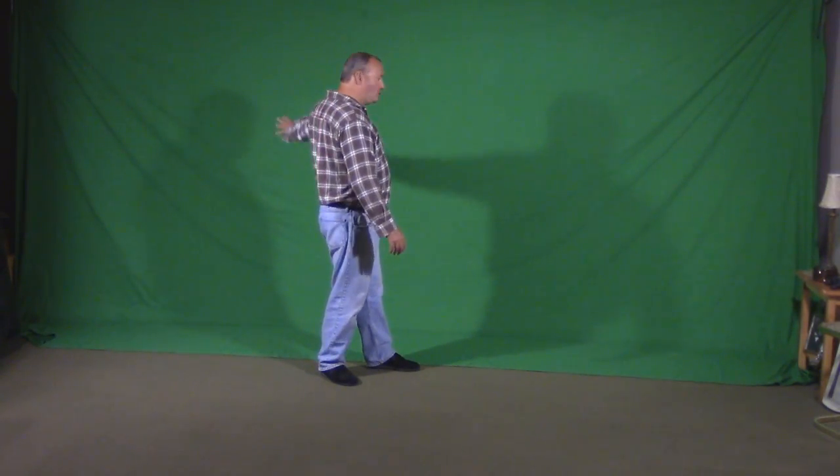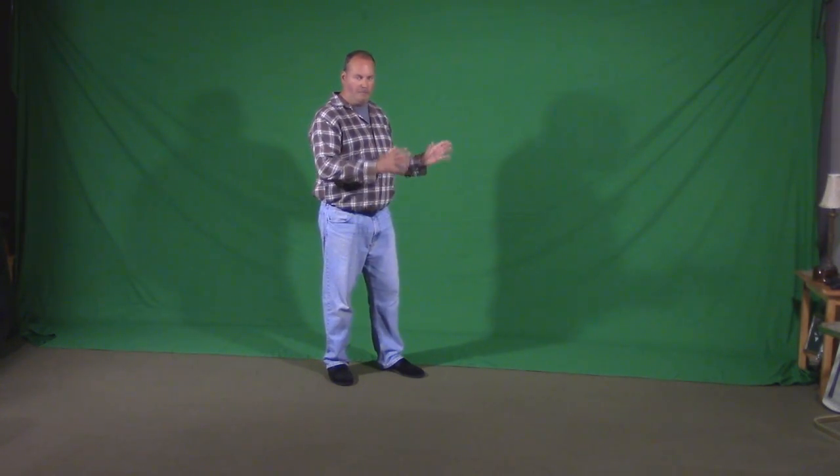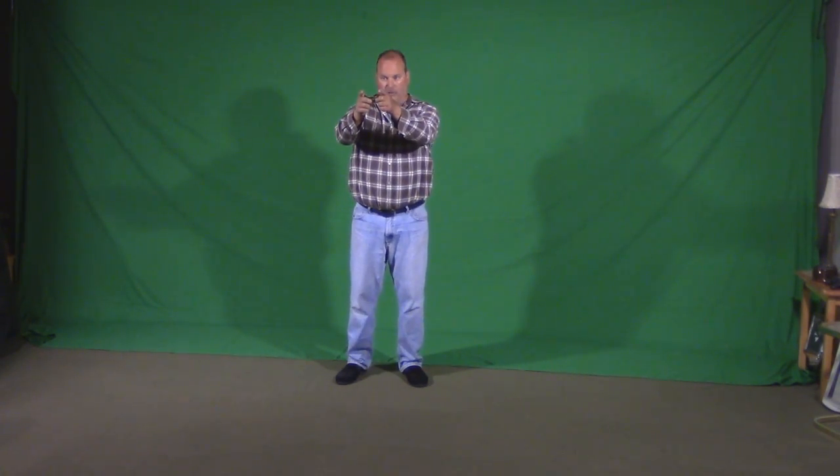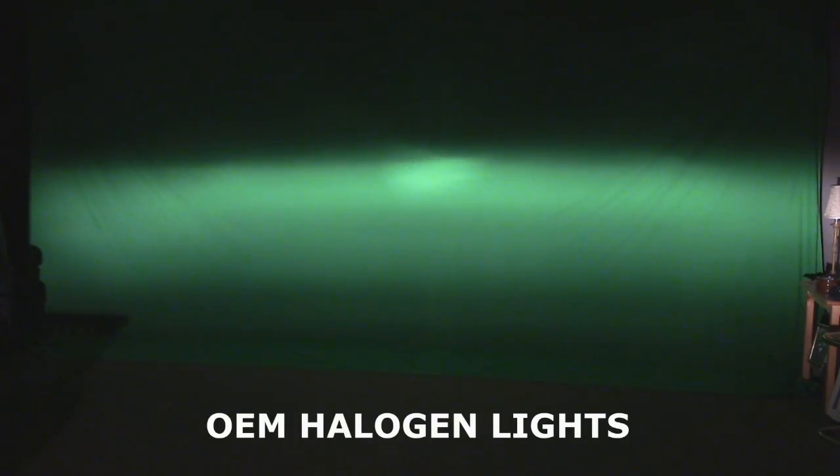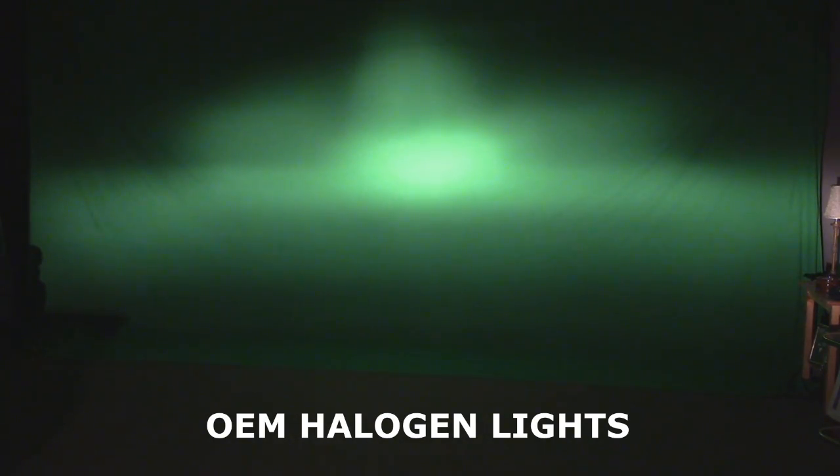Okay, I cleaned out my entire basement. I set up my green screen in behind. I'm going to use that as a wall to show you the beam patterns for each light. I'll show you the low and I'll show you the high. 25 feet in that direction is the headlights. So let's get started. This is the OEM halogen lights. Low beam and high beam.